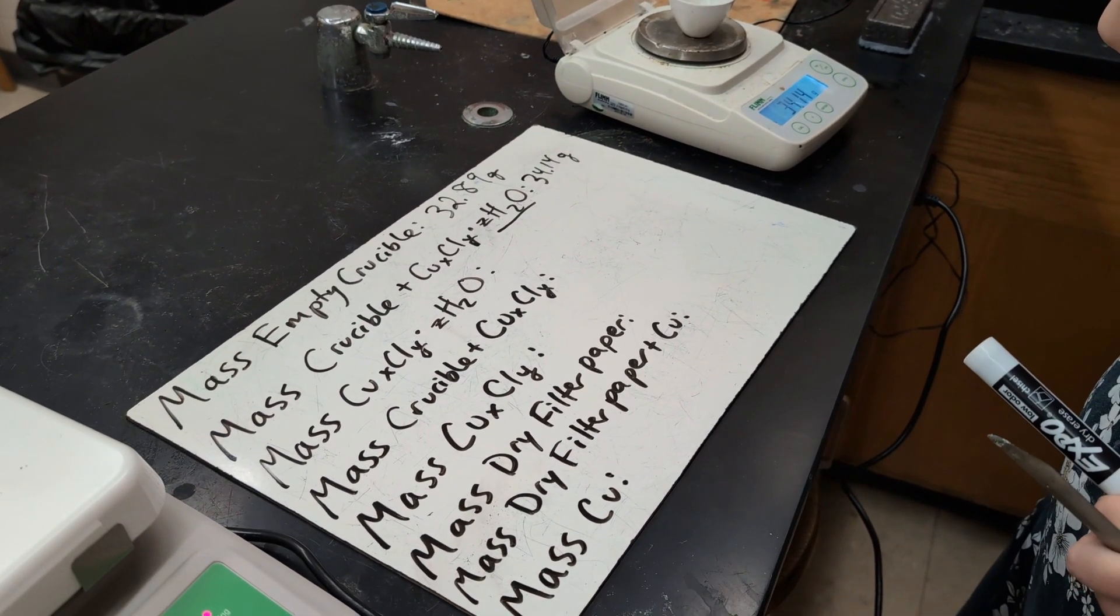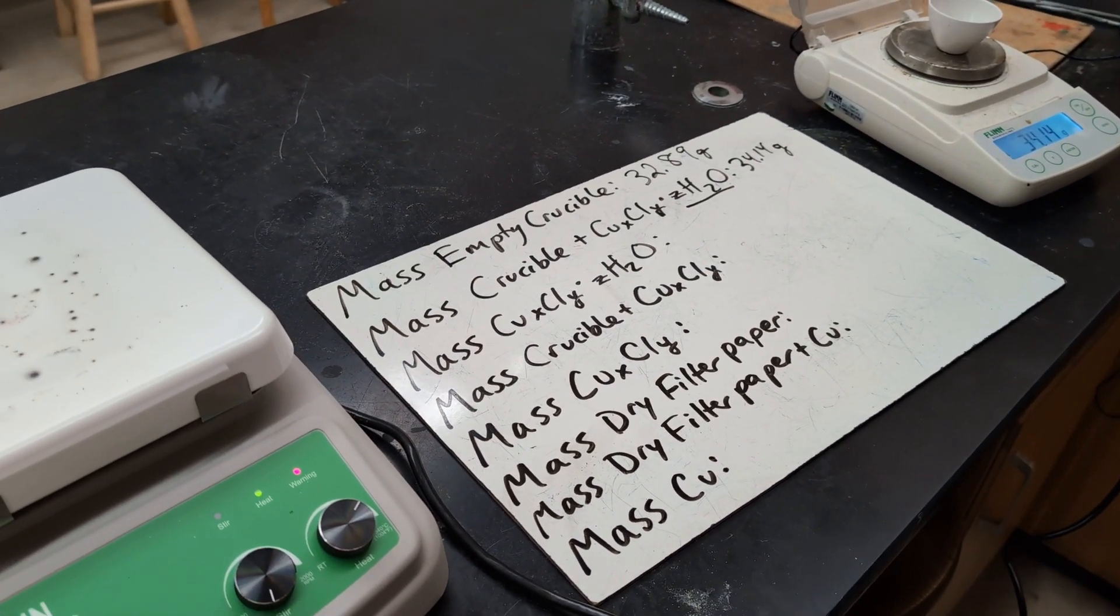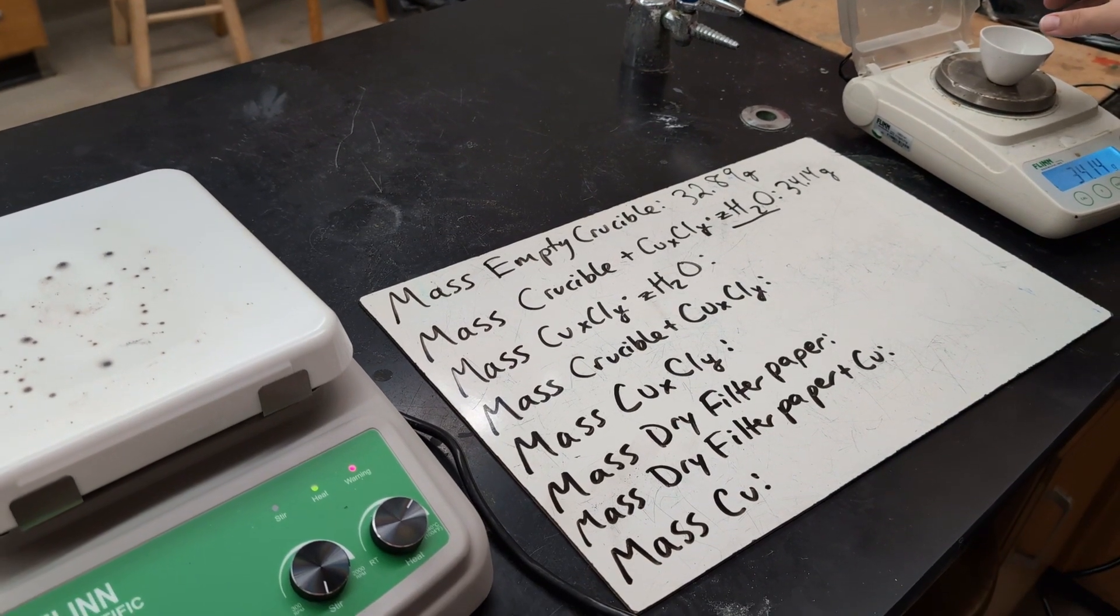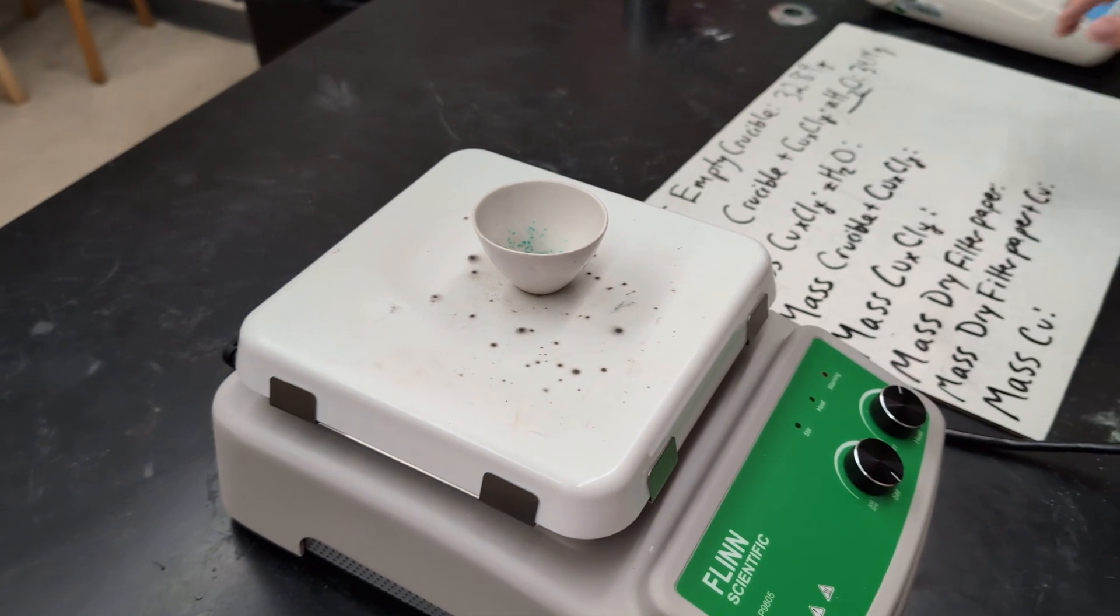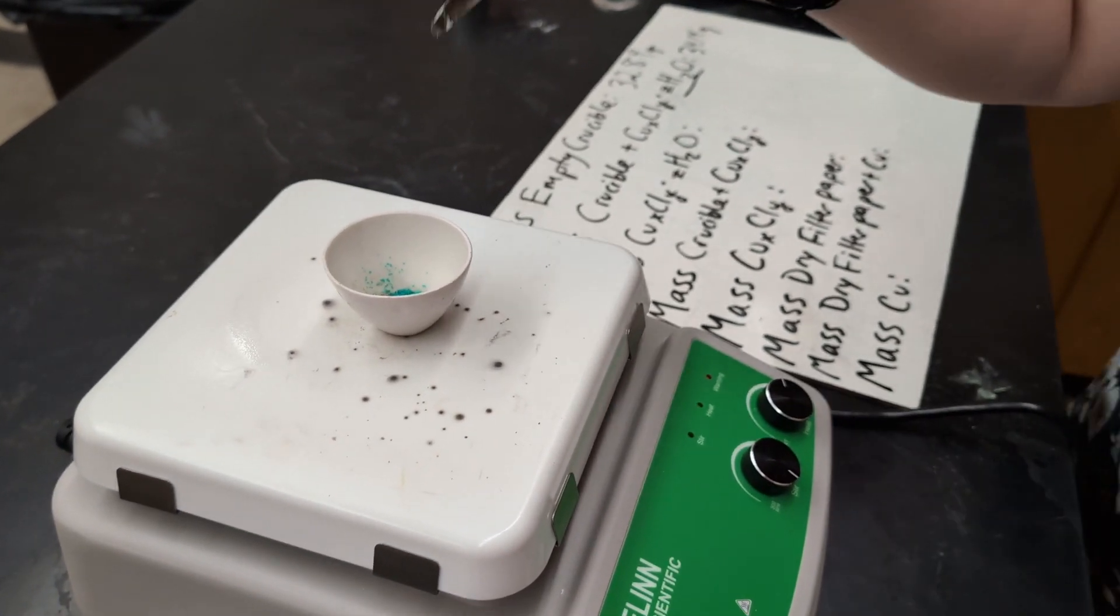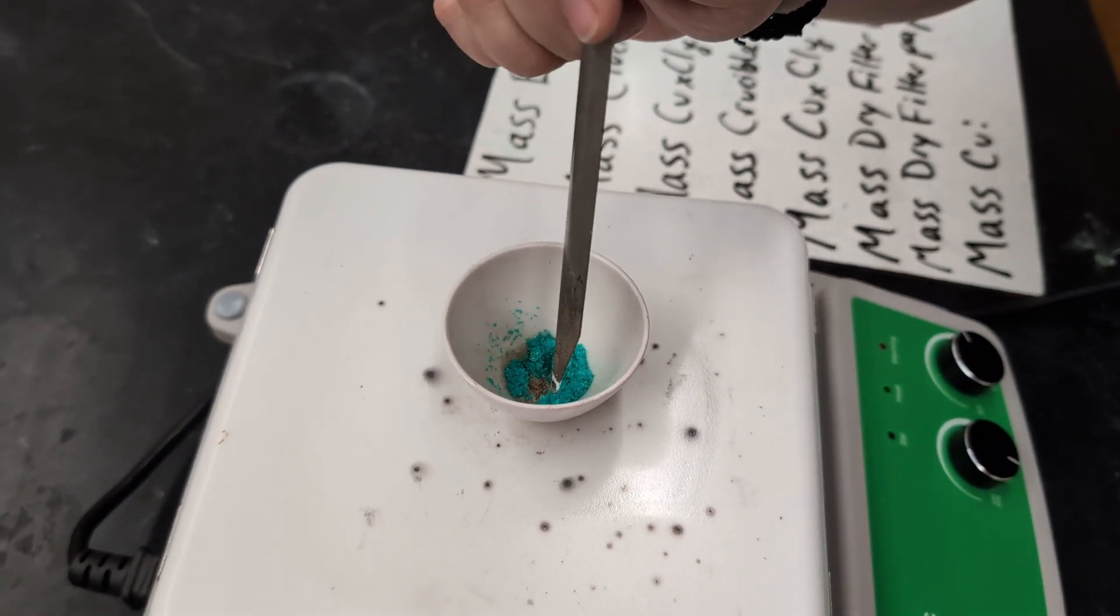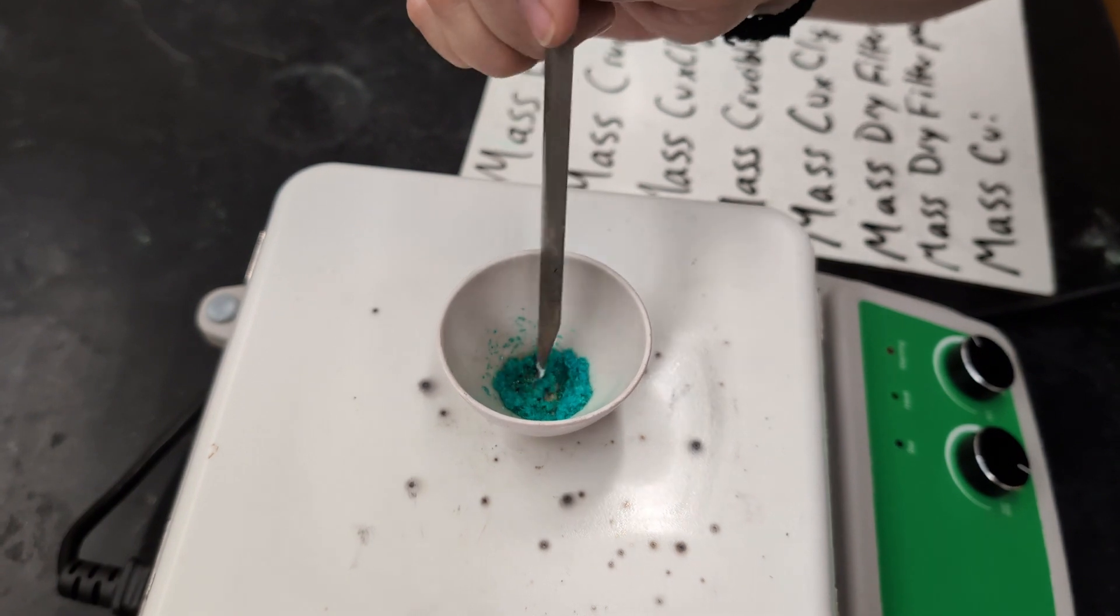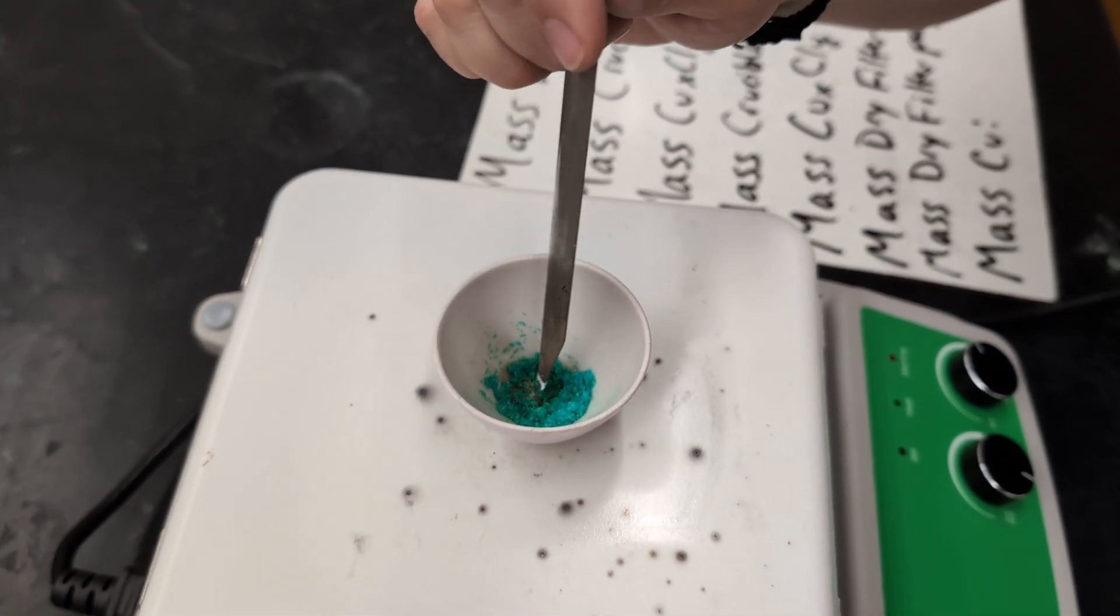Now we are going to heat in order to isolate the copper chloride compound and evaporate all of the water out. So we're going to heat that on a hot plate. You need to make sure that you are continuously stirring so that the compound doesn't burn. If it starts to turn a black color, that's how you know it's starting to burn. But you'll see it turn kind of green and then eventually brown as it is dehydrating.